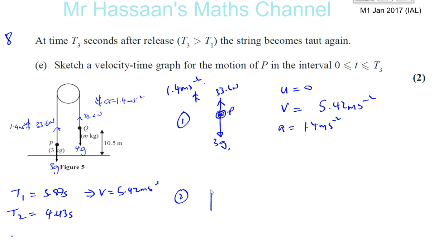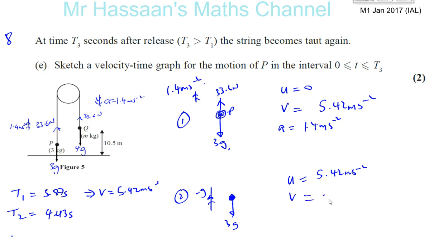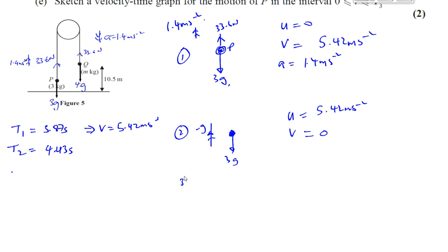Then what's happened: it's still moving up, but this time there's no tension in the string. It's just being pulled down by gravity, so the acceleration is minus G — not 1.4, but minus G. The initial speed in this phase is 5.42 m/s (the speed it had just before the string became taut), and the final speed is zero because it comes to rest.